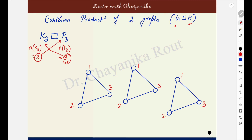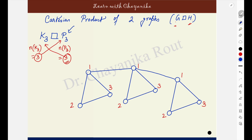After you have labeled all the vertices like this, you look at the vertices which are labeled with the same labeling. For example, these 3 vertices are labeled with the label 1. Use these vertices having the same labeling to create a copy of the other graph. The other graph is P3, so I will create a copy of P3 using the vertices with the same labeling. These 3 vertices labeled 1, 1, 1 will be used and a copy of P3 will be created. P3 is a path on 3 vertices, so this is a copy of P3.